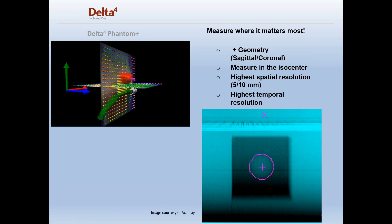The diodes are positioned internal to the phantom on a sagittal and a coronal plane. The measurement is at isocenter in most cases, depending upon how you position the phantom. At the center 10x10 region there are 5mm spacing, and outside of that 10x10 region there are 10mm spacing.